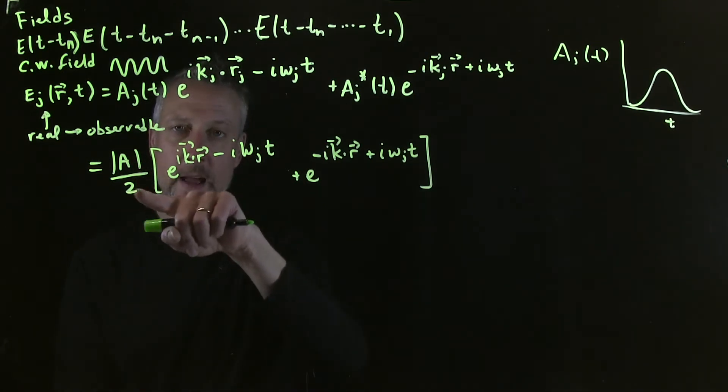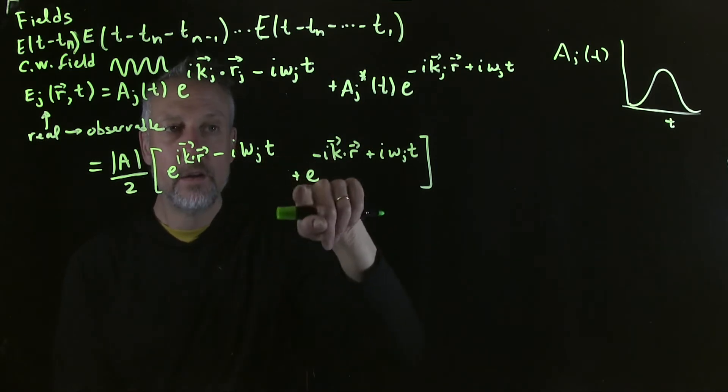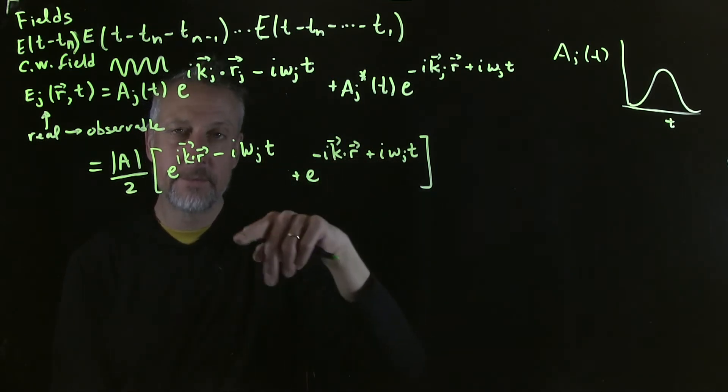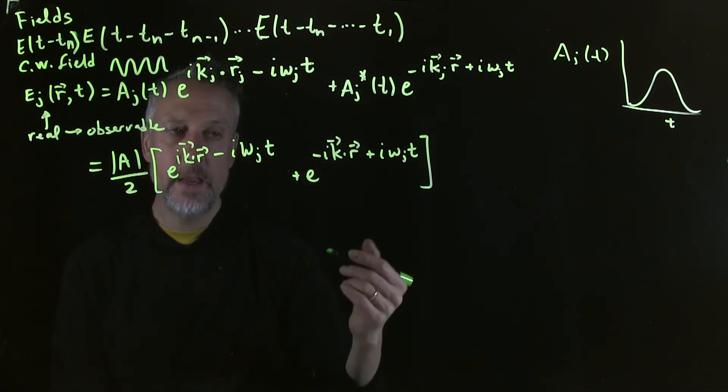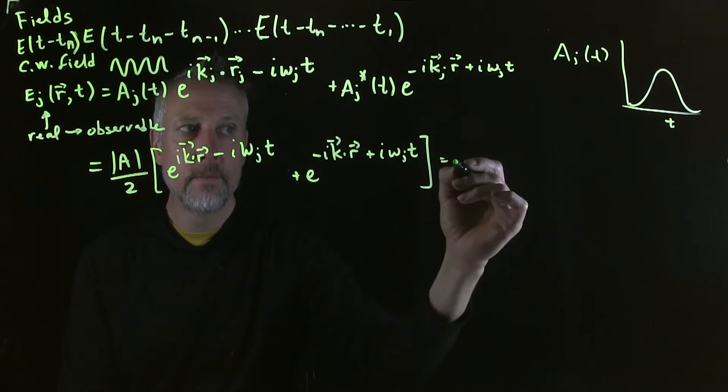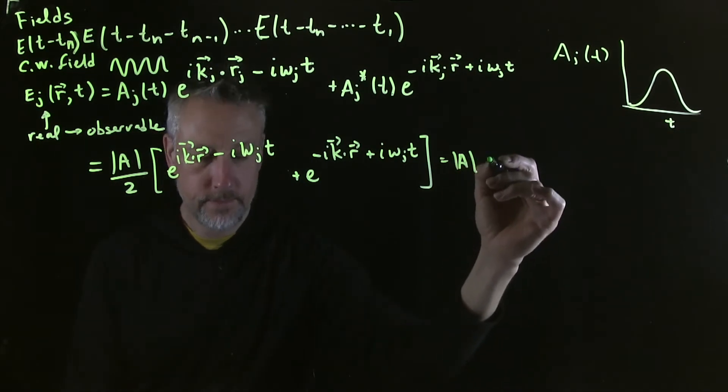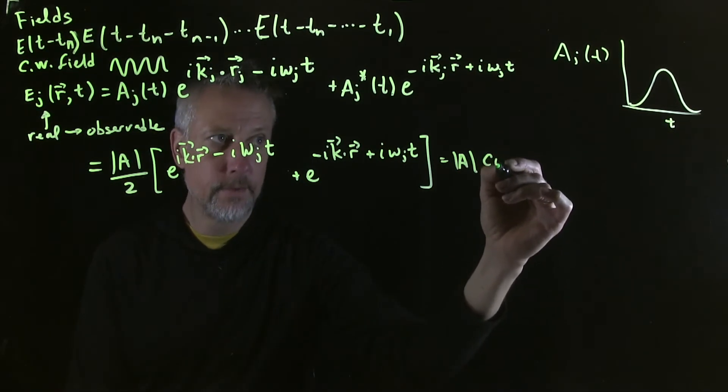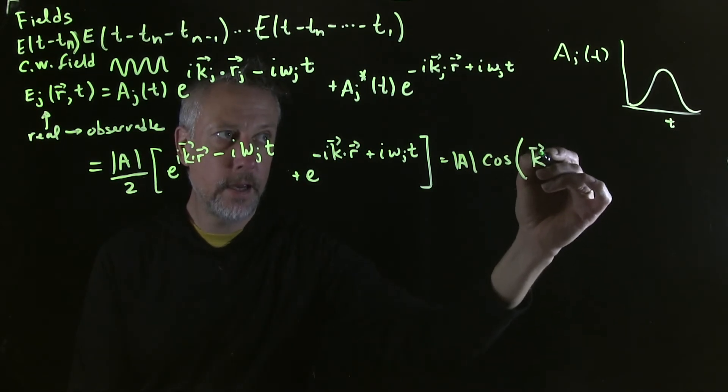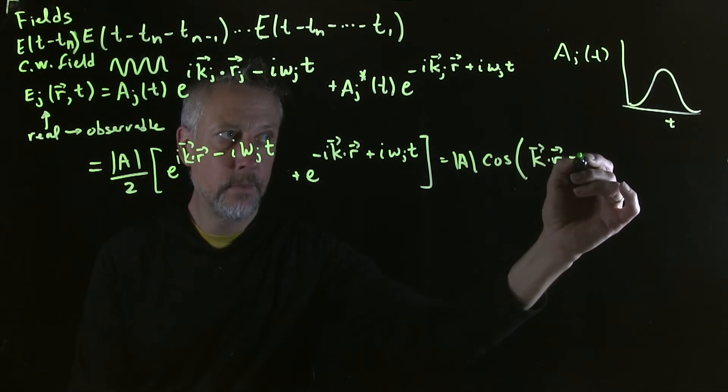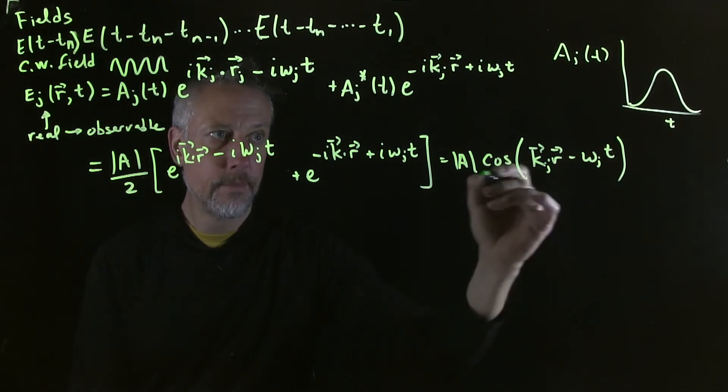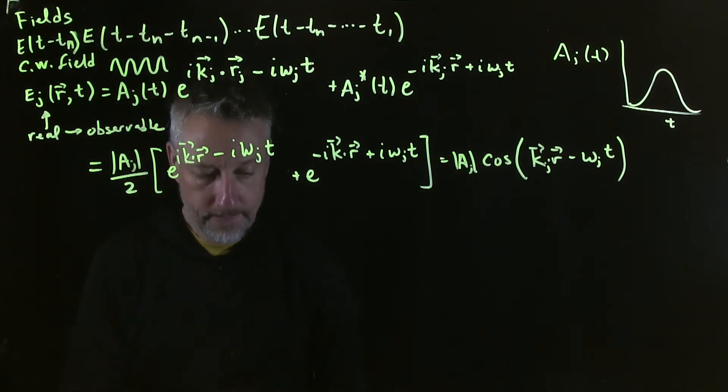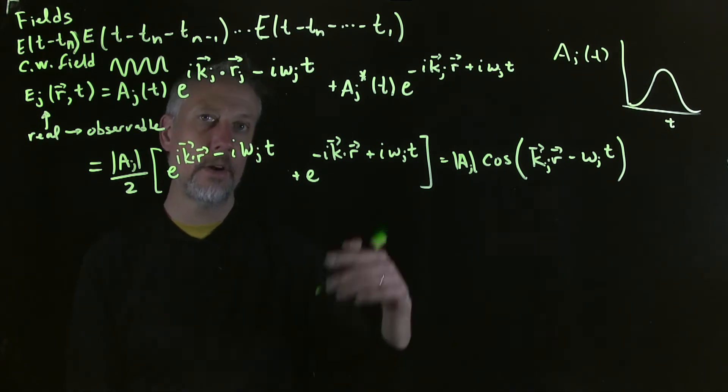Well, if you look at this, this looks like one half times E to the I theta plus E to the minus I theta, where theta would be like K dot R minus omega J times t. Then that means this is a cosine. So we have A and then we have cosine K dot R minus omega J times t.